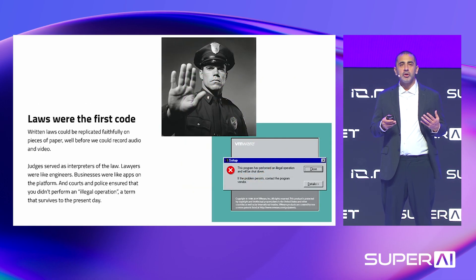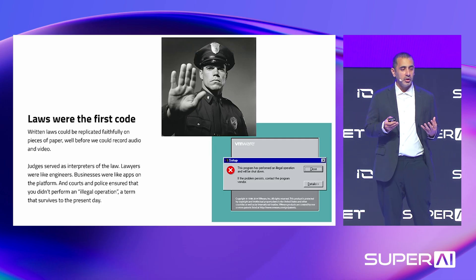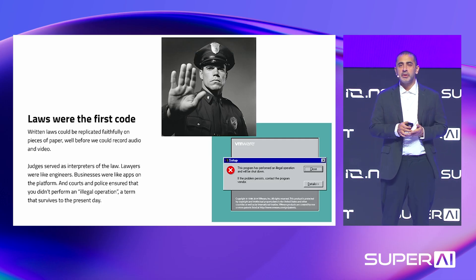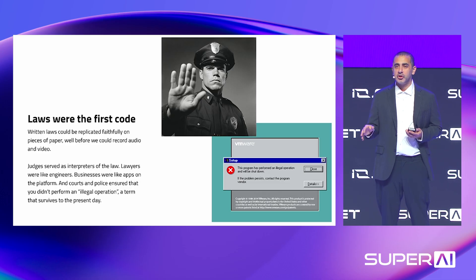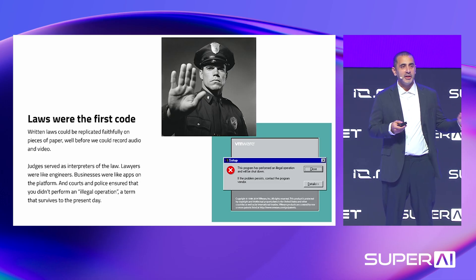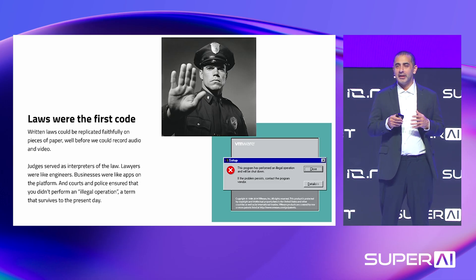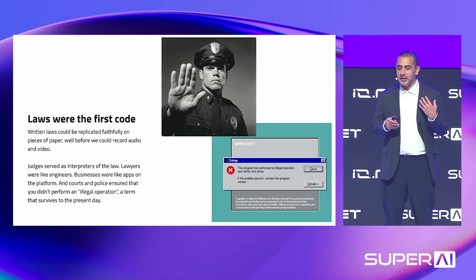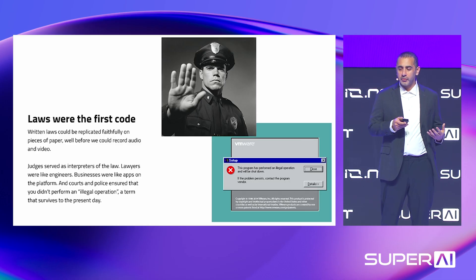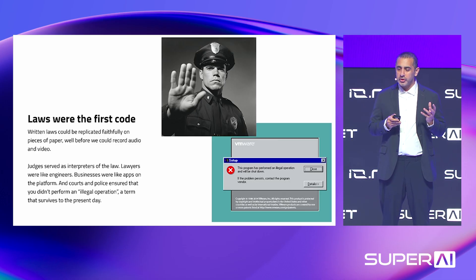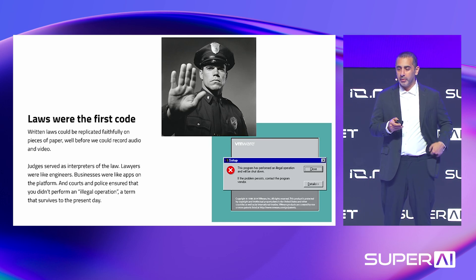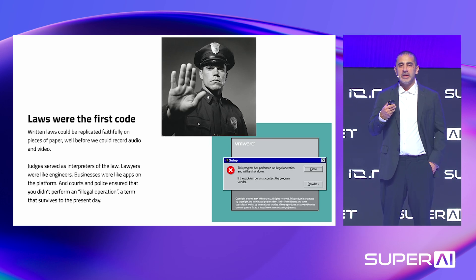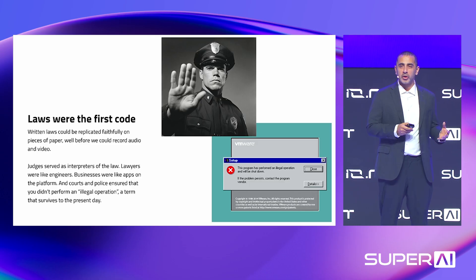You can think of laws as being like the first kind of code. When a policeman holds up his hand and says 'that's an illegal action,' it's a lot like Windows saying 'that's an illegal operation.' In a sense, judges served as interpreters of the law, lawyers were like engineers, and businesses were like apps on the state's platform. It's basically code before code.